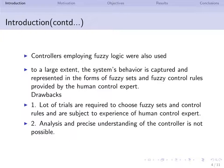Alternatively, controllers employing fuzzy logic were also used to control complex and mathematically ill-defined plants. These fuzzy logic controllers gave better performance in such situations because the system's behavior is captured and represented in the form of fuzzy sets and fuzzy control rules provided by human control experts. However, the drawbacks are: lots of trials are required to choose fuzzy sets and control rules subject to experience of the human expert, and analysis and precise understanding of the controller is not possible.